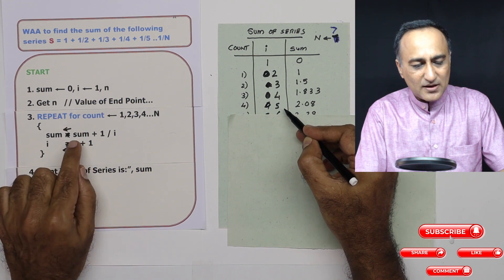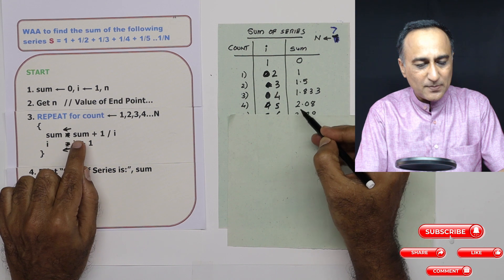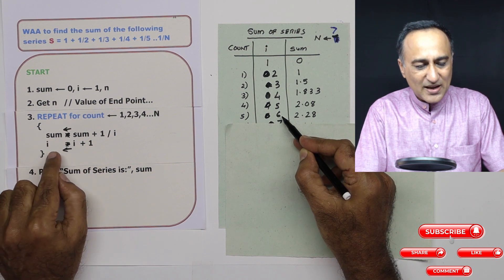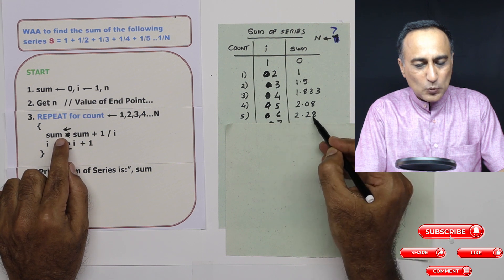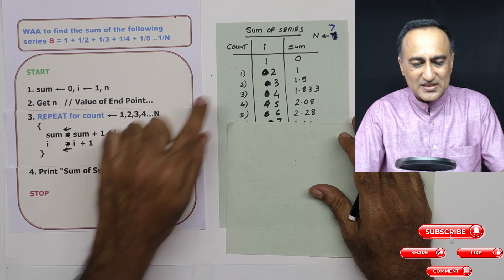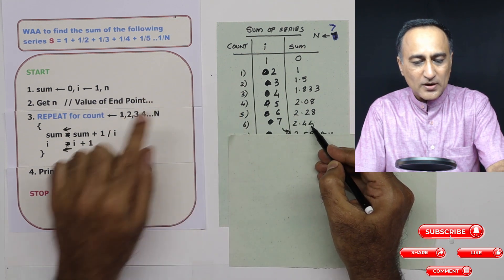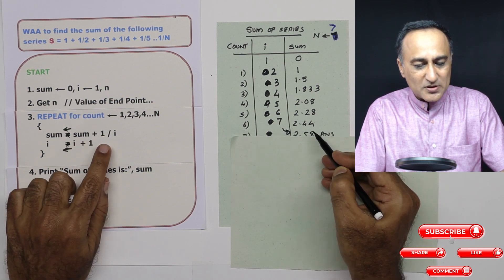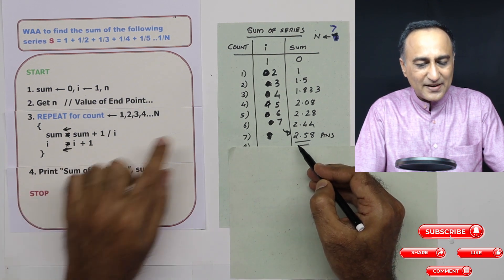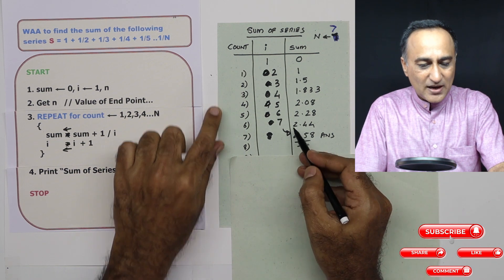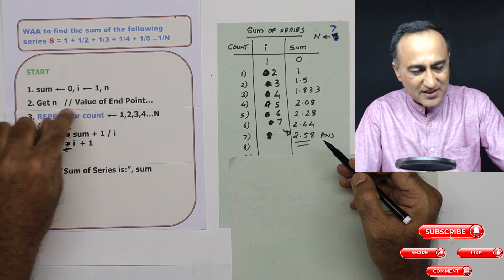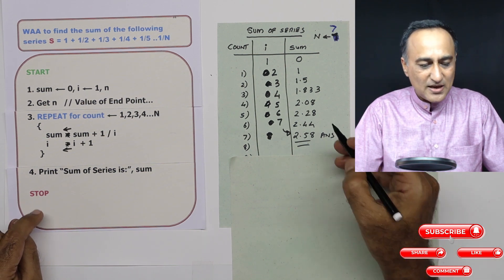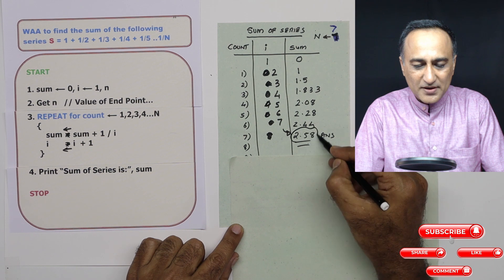Since i becomes 5, we come back one more count. Sum is 2.08 plus 1 upon 5, which is 0.20, so it becomes 2.28 and i has become 6. Sum is 2.28 plus 1 upon 6, which is approximately 0.16, so it is 2.44. Then i becomes 7, and it is 2.44 plus 1 upon 7, giving 2.58. All these steps are over because the block has run seven times, so I am going to print the sum of the series as 2.58 and halt.